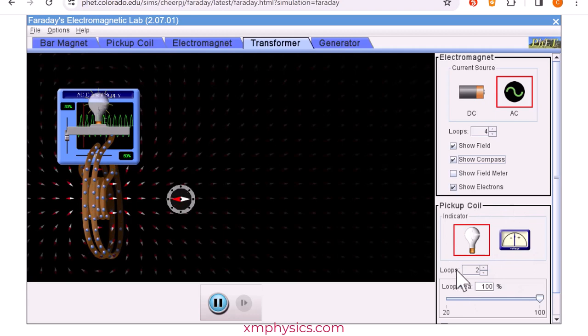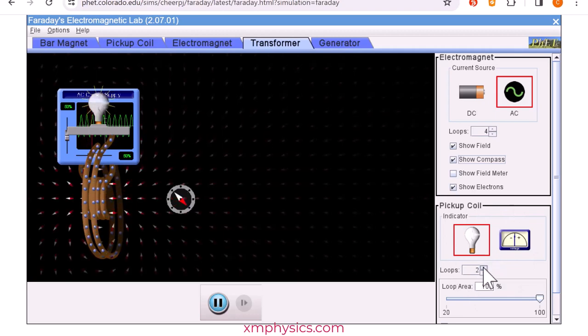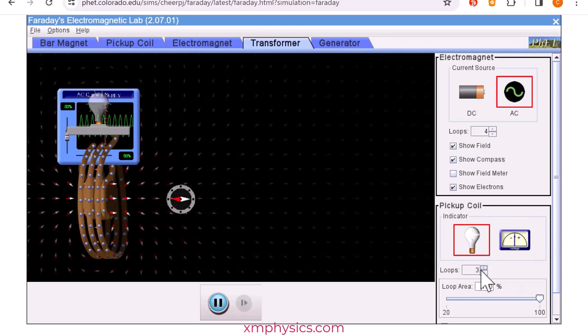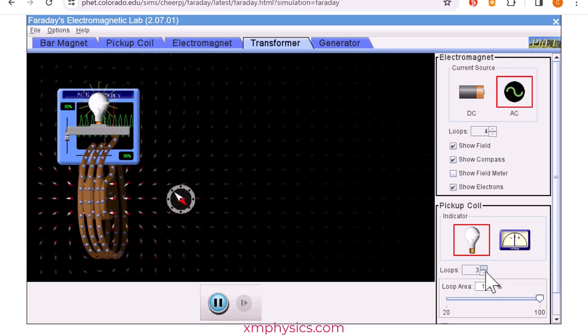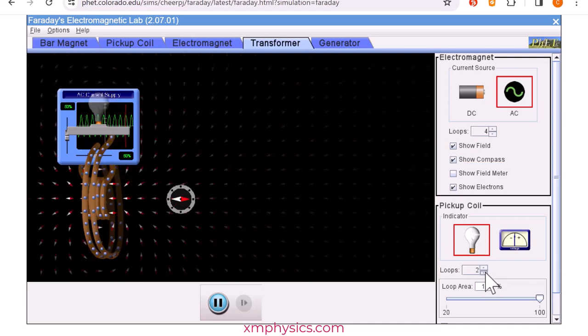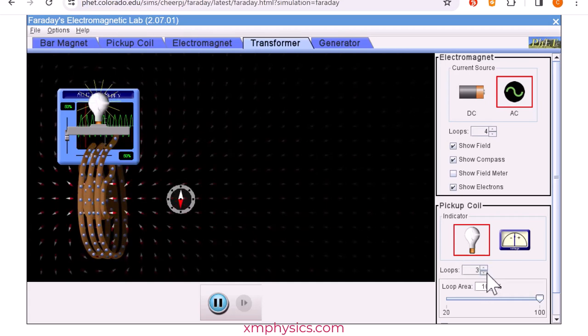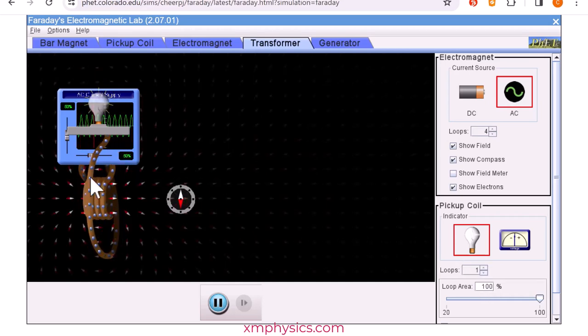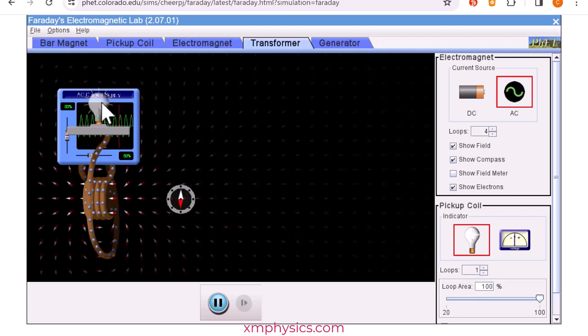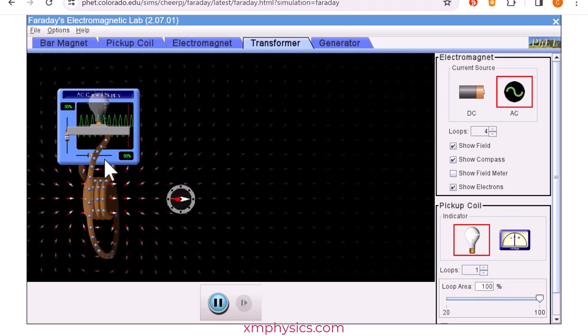There's an option here for me to increase the number of loops. So let's try that. The maximum is three. So this is two loops, not so bright. Three loops, brighter. If I bring it down to one loop, it's even dimmer now. So remember, the flux linkage depends on the number of loops as well.